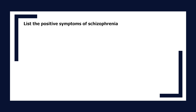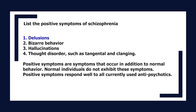List the positive symptoms of schizophrenia: delusions, bizarre behavior, hallucinations, and thought disorder such as tangential thinking and clanging. Positive symptoms are symptoms that occur in addition to normal behavior — normal individuals do not exhibit these symptoms. Positive symptoms respond well to all currently used antipsychotics.